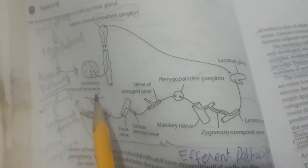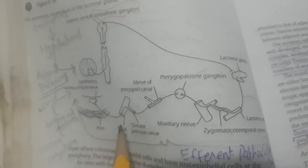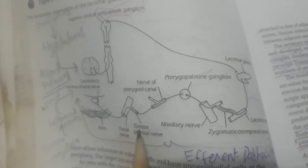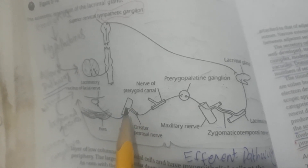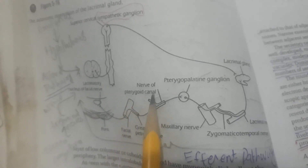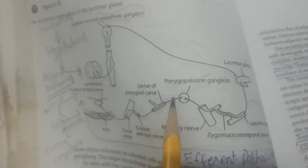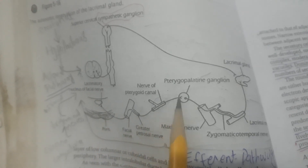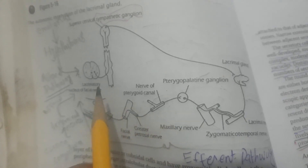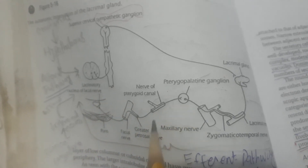For the parasympathetic pathway, fibers from the lacrimatory nucleus enter the facial nerve, then pass through the greater petrosal nerve, and then enter the nerve of the pterygoid canal. These fibers are called preganglionic fibers, because they have not yet synapsed with another ganglion.